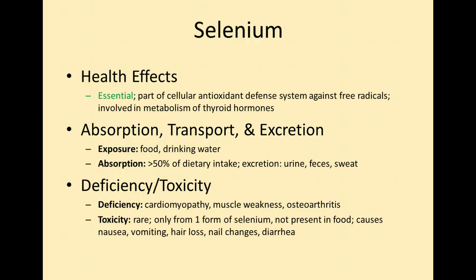Selenium is also essential. It is part of the cellular antioxidant defense system against free radicals and is involved with the metabolism of thyroid hormones. It may help prevent cancer by fighting free radicals that can cause gene mutations. We can be exposed through food or drinking water. Deficiency can cause cardiomyopathy, muscle weakness, and osteoarthritis. Toxicity is relatively rare but would again cause nausea, vomiting, and similar GI symptoms.